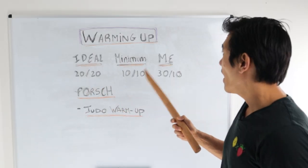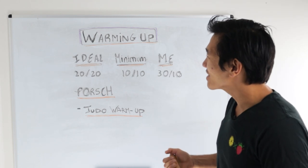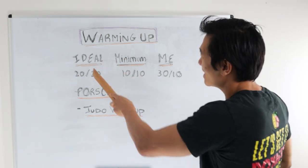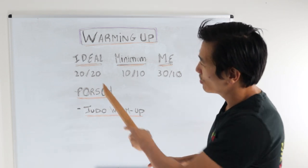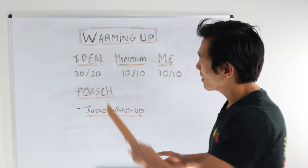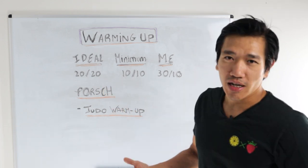The importance of warming up is really for injury prevention. There's an ideal time, there's a minimum time, and there's what I do. So let's talk about the ideal here. The ideal time is 20-20. The first 20 minutes is warming up, the other 20 minutes is for the cool down.